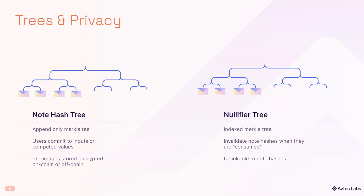But why? We use two trees to maintain maximum privacy for users. We have one tree where data is added to, called the note hash tree, and a second tree where we nullify notes, or mark the data as deleted. Technically we may use more than one tree for each of these when there is a lot of data on the network, but there will always be at least one tree in use. Old trees would be for historic data. Having two trees allows us to update a leaf by adding a new leaf to the note hash tree and adding the nullifier of the old leaf to the nullifier tree. That way we can show that the new note hash leaf is the active one and that the old leaf is deleted.